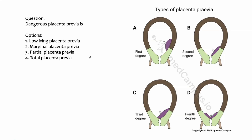There are three things you are going to learn from this video. First and foremost, what are the different types of placenta previa, second what is dangerous placenta previa, and third what is Stalwortis sign. These are the three important high yield points to be covered, so let us start our discussion with the types of placenta previa.